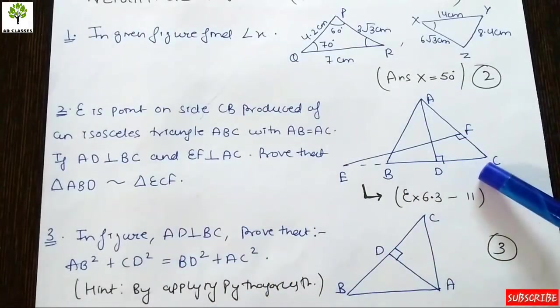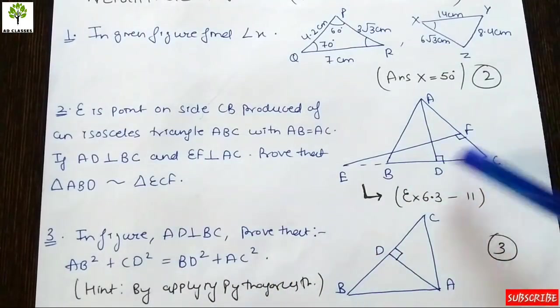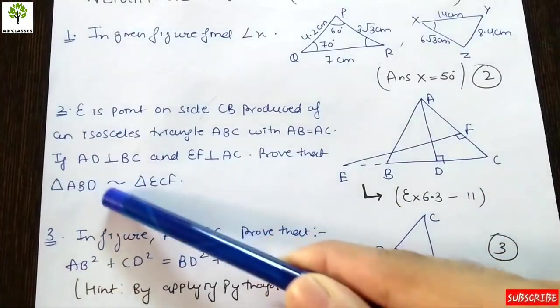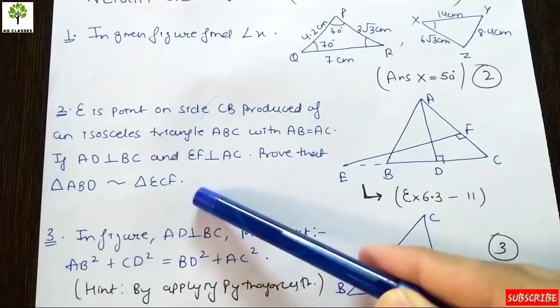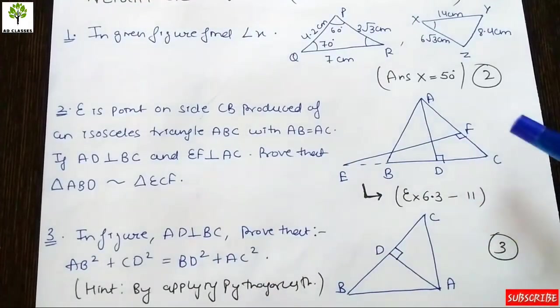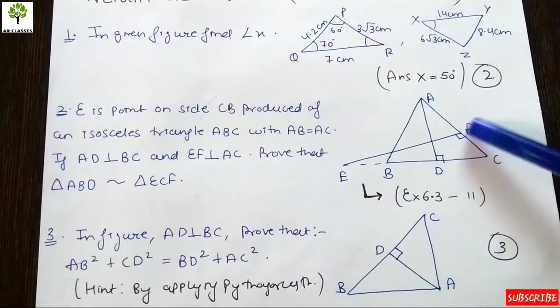AD is perpendicular to BC and EF is perpendicular to AC. Prove that triangle ABD is similar to triangle ECF. We have to prove triangle ABD is similar to triangle ECF.